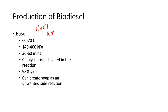The base-catalyzed reaction achieves a 98% yield in around 60 minutes, which is pretty good. However, soap can form as an unwanted side reaction, because soap is made from sodium hydroxide and a triglyceride. If you use too much catalyst, you can end up making soap instead of biodiesel, which is not very useful.